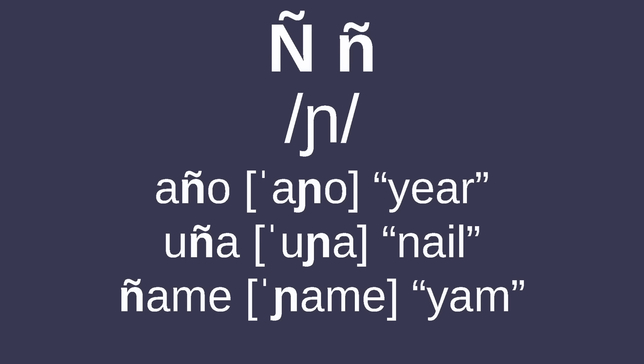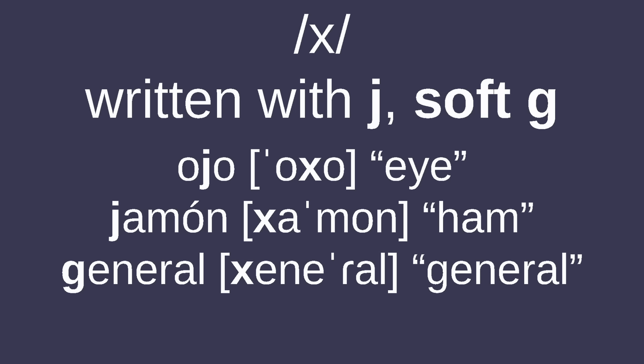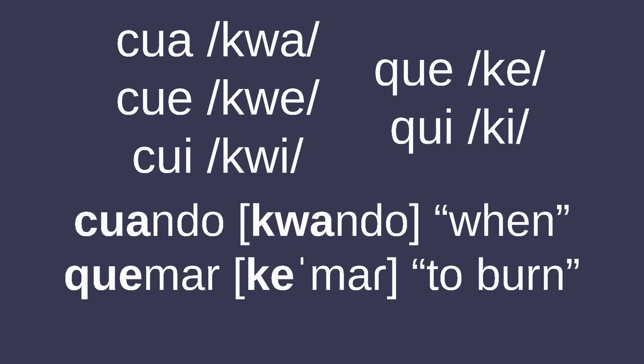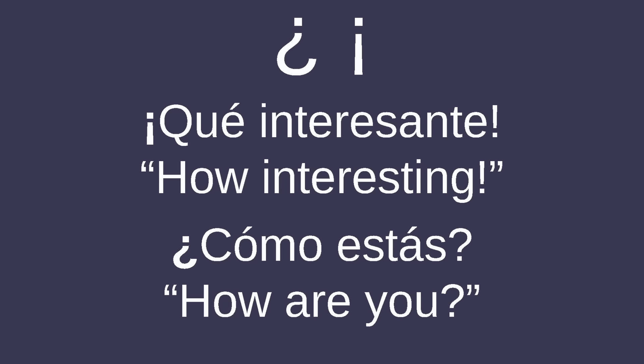The most iconic feature of Spanish orthography is N-tilde, called 'eñe,' for the palatal nasal. Most Spanish dialects have lost /ʎ/, merging it with /j/, but words that used to have it are still spelled with LL as opposed to Y. The velar fricative /x/ is represented with J and soft G. GUE and GUI represent /ge/ and /gi/ respectively, while U with diaresis indicates when the W is pronounced. Spanish uses CU instead of QU for /kwa/, but does use QU in QUE and QUI. Both B and V represent the same sound, and upside-down question and exclamation marks are used at the start of sentences.